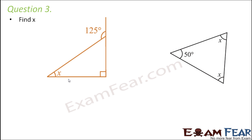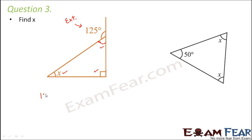In the first diagram, which is the interior angle and which is the exterior angle? In this case, these are the interior angles — this is interior, this is interior, this is also interior. But when you look at this 125 degree, this is an exterior angle. So again we will make use of the exterior angle property.